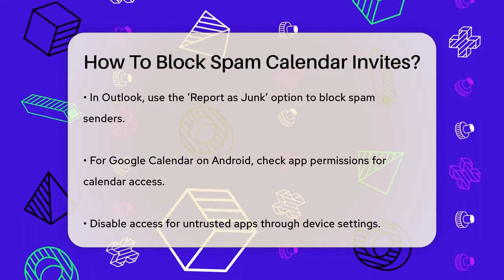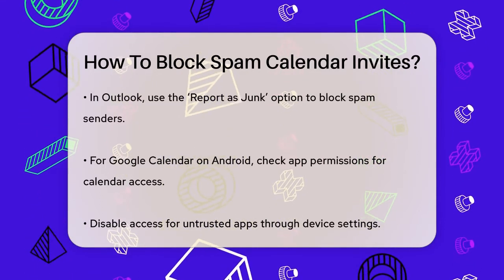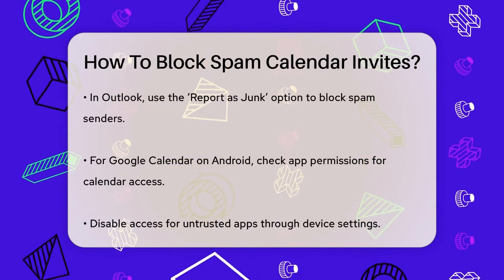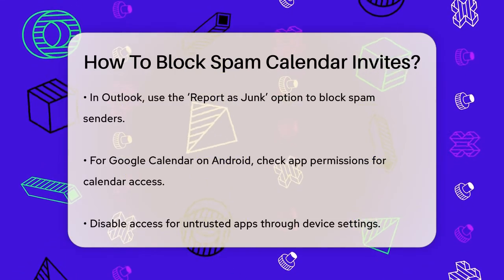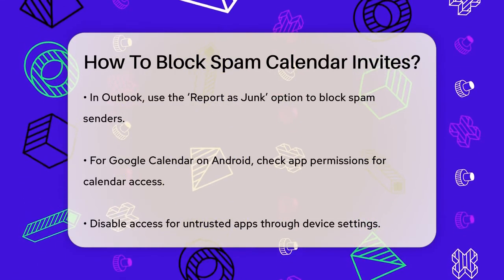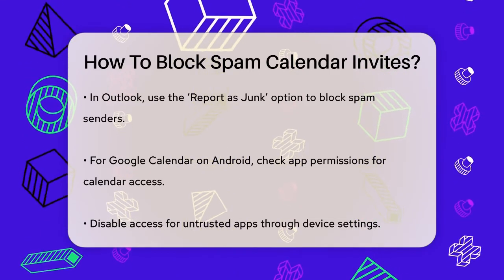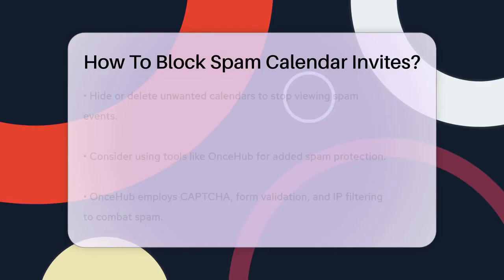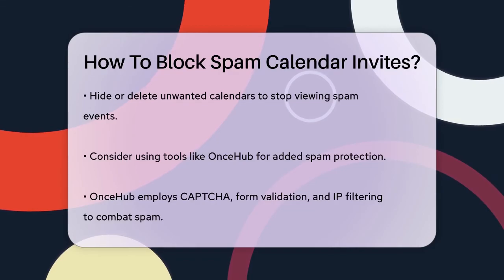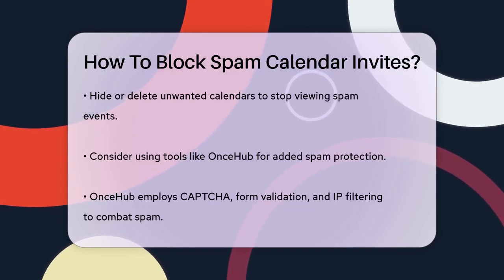For Google Calendar users on Android, you need to review which apps have access to your calendar. Go to your Android device's settings, tap on Privacy, then Permission Manager, and finally Calendar. Here, you can turn off calendar access for any app that you don't trust. Additionally, you can hide or delete calendars that you didn't create to stop viewing spam events.